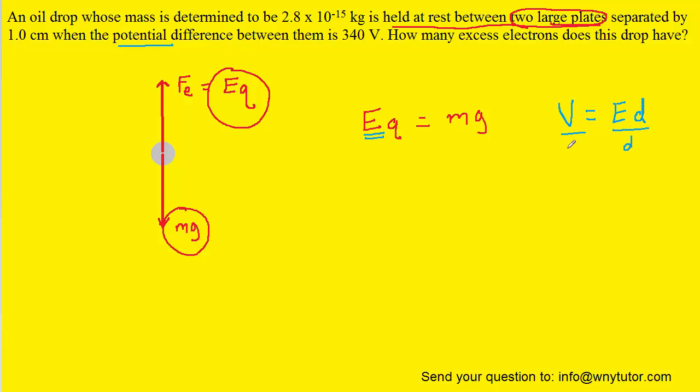And to do that we'll divide both sides by the distance d. And so we can see that electric field is equal to the electric potential divided by a distance. We're going to substitute this expression in here for the electric field.